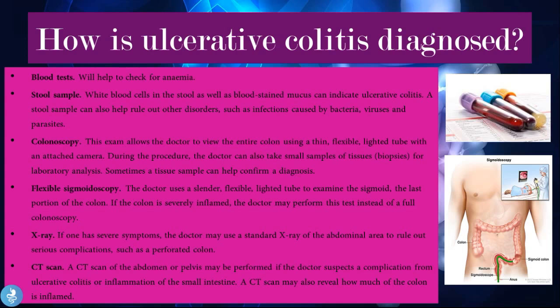Flexible sigmoidoscopy uses a slender flexible lighted tube to examine the sigmoid colon — the last portion of the colon. If the colon is severely inflamed, the doctor may perform this instead of a full colonoscopy. X-rays: if one has severe symptoms, a standard x-ray of the abdominal area can rule out serious complications such as a perforated colon. A CT scan of the abdomen or pelvis may be performed if the doctor suspects a complication from ulcerative colitis or inflammation of the small intestine, and it may also reveal how much of the colon is inflamed.